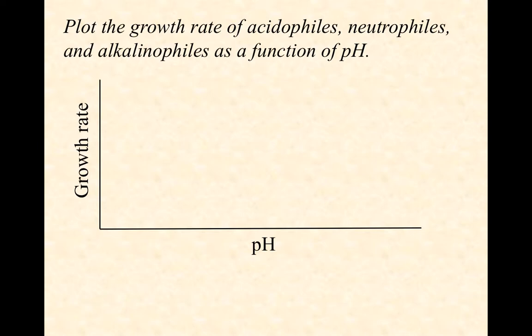The same thing is true with pH. We have acidophiles, neutrophiles, and alkalinophiles, sometimes called alkalophiles. You should draw on a graph like this the growth rate curves as a function of pH for each of these three categories. In this case, because too acidic conditions and too alkaline conditions have essentially the same effect on the way proteins fold, these curves are actually symmetrical around their optimum, as opposed to the temperature curves, which we saw were asymmetrical around the optimum.